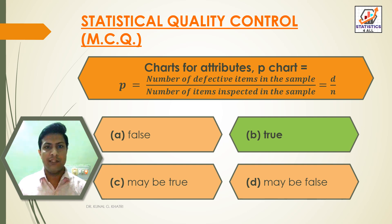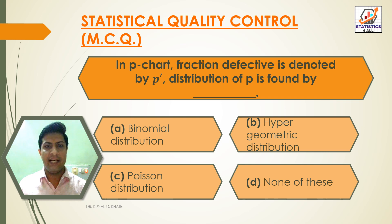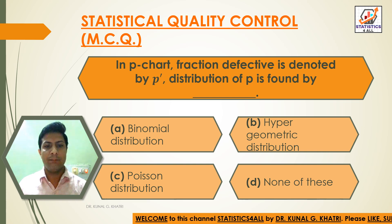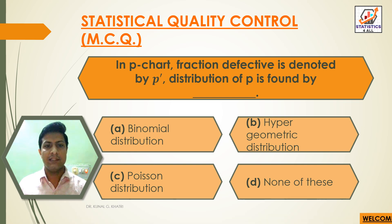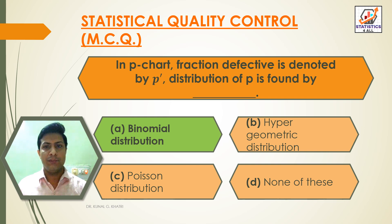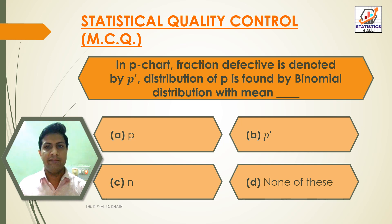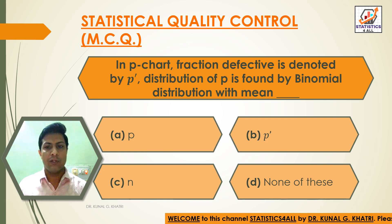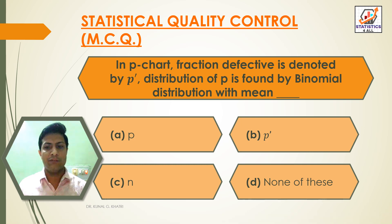Question 7: In P chart, fraction defective is denoted by P-dash. Distribution of P is found by: Option A: Binomial distribution, Option B: Hypergeometric distribution, Option C: Poisson distribution, Option D: None of these. Answer: Option A — Binomial distribution. Distribution of P is found by binomial distribution with mean P-dash.